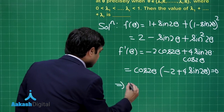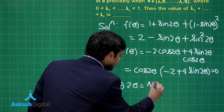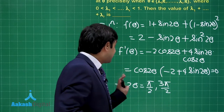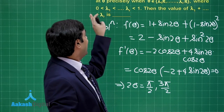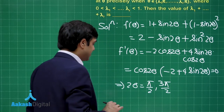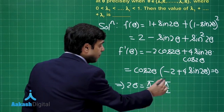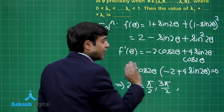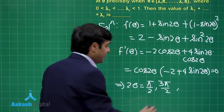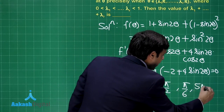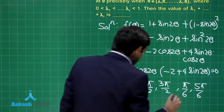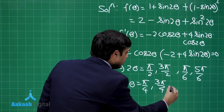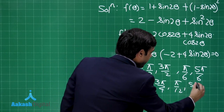Setting f'(θ) = 0: either cos 2θ = 0 giving 2θ = π/2 or 3π/2, so θ = π/4 or 3π/4; or (−2 + 4 sin 2θ) = 0 giving sin 2θ = 1/2, so 2θ = π/6 or 5π/6, giving θ = π/12 or 5π/12. All four critical points lie in (0, π): θ = π/12, π/4, 5π/12, 3π/4.